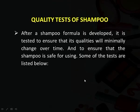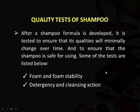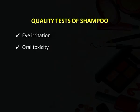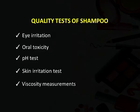There are certain quality tests for shampoo before it is sold in the market. After the shampoo formula is developed, it is tested to ensure its quality will minimally change over time and that the shampoo is safe for use. Some of the tests are: foam and foam stability test, detergency and cleansing action efficiency, eye irritation test, oral toxicity test to ensure it is not toxic if accidentally inhaled or ingested, pH test to confirm the acidic range, skin irritation test, and viscosity measurement to ensure proper viscosity.